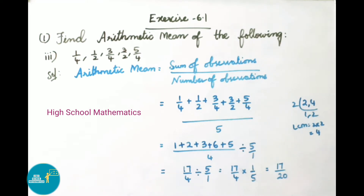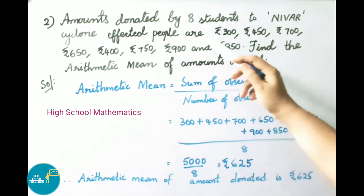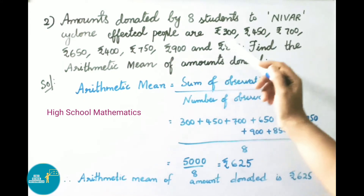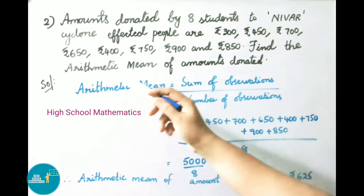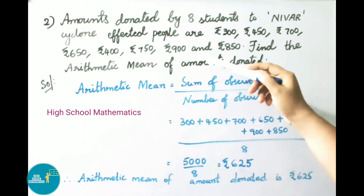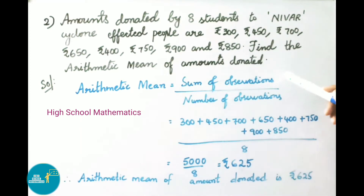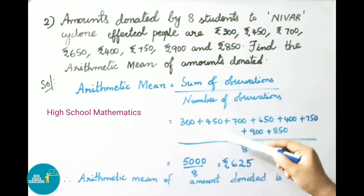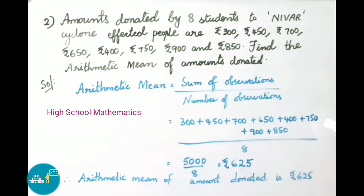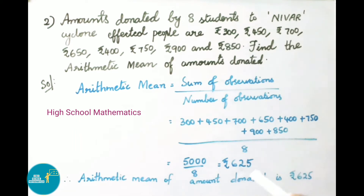Question 2: Amounts donated by 8 students to Niva cyclone-affected people are ₹300, ₹450, ₹700, ₹650, ₹400, ₹750, ₹900, and ₹850. Find the arithmetic mean of the amounts donated. Arithmetic mean = (300 + 450 + 700 + 650 + 400 + 750 + 900 + 850) / 8 = 5000 / 8 = ₹625.